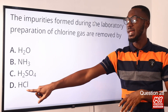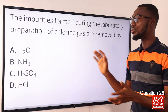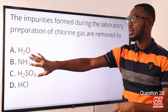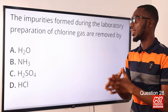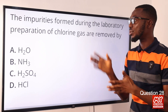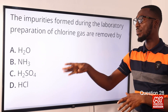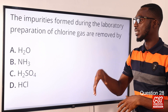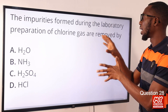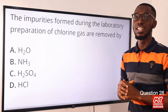To remove HCl from this so that you can get a pure sample of chlorine gas, what you do is pass this mixture through water — HCl will dissolve in water. Then the pure chlorine gas that you have gotten, since you have removed the impurities by passing it through water, you can now use H2SO4 to dry up the pure sample of this gas. So the impurities are removed by water, H2O. The correct option here is option A.